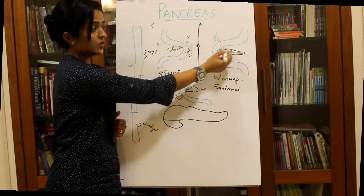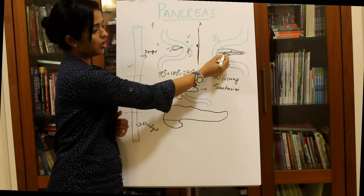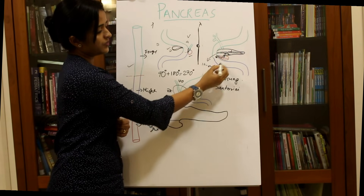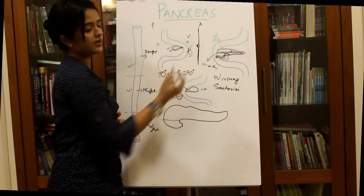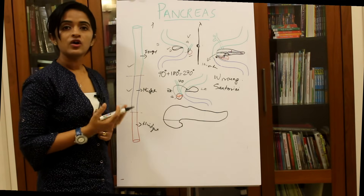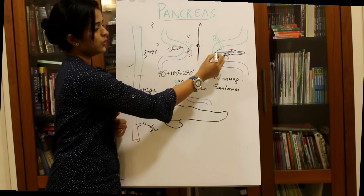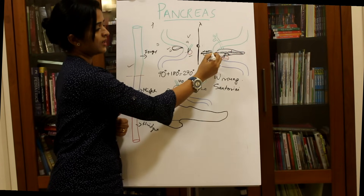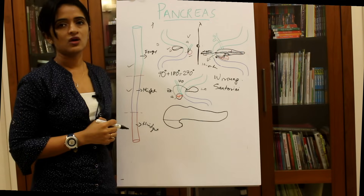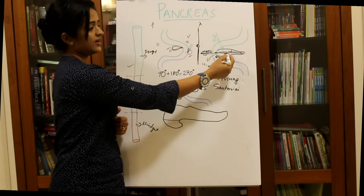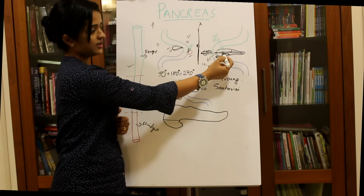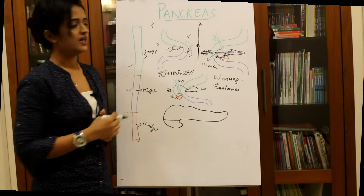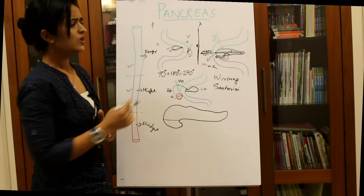The proximal portion of the dorsal pancreatic bud's duct forms the minor pancreatic duct, also called the duct of Santorini or the accessory pancreatic duct. This minor duct usually regresses or may persist as a rudimentary duct, opening at the minor duodenal papilla. Since it is not always present, it is also called the accessory pancreatic duct. So the major duct has three sources, whereas the minor duct is just the proximal portion of the dorsal pancreatic bud's duct.